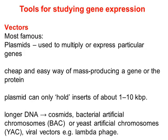بالنسبة للـ YAC (Yeast Artificial Chromosome) والـ BAC (Bacterial Artificial Chromosome)، الـ YAC يوفر ميزة إضافية: لأن الخميرة eukaryote، يمكنها إعطاء الـ post-translational modification التي لا تتوفر بشكل كافٍ في البكتيريا.